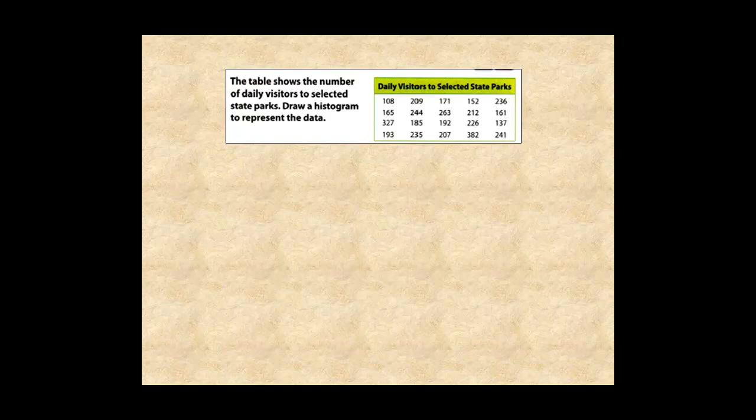Here's how to draw a histogram step-by-step. This table shows the number of daily visitors to selected state parks. The first step is to scan the data looking for the smallest and largest data values, which are 108 to 382.